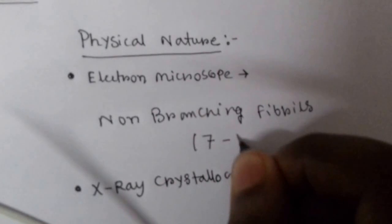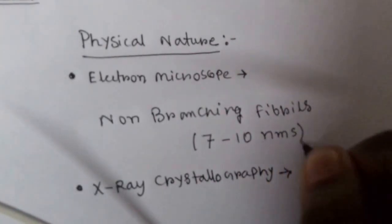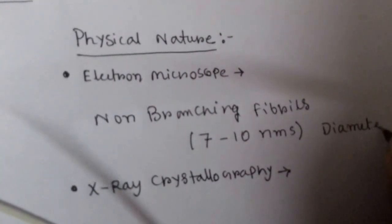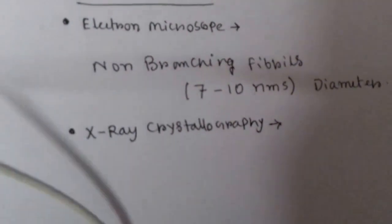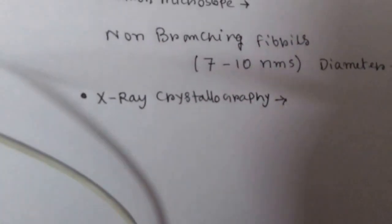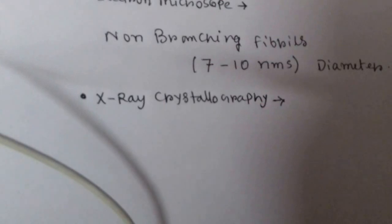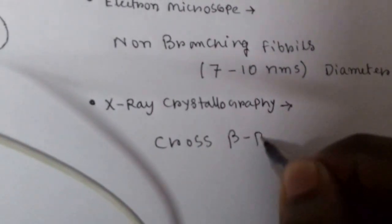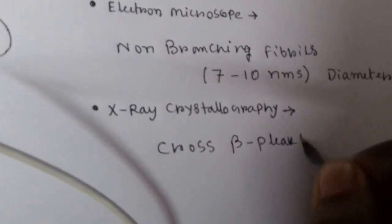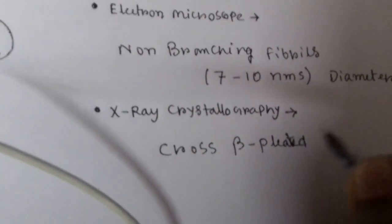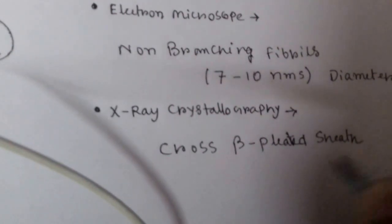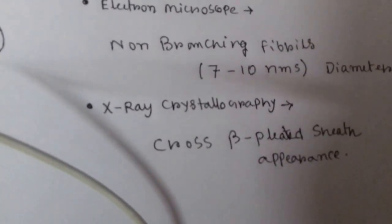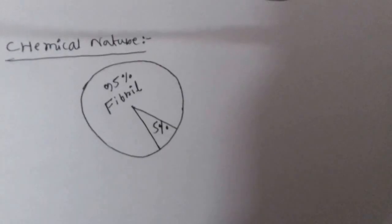They are 7 to 10 nanometers in diameter. And in x-ray crystallography we can see them as cross beta-pleated sheet appearance. This is the physical nature of these amyloids.